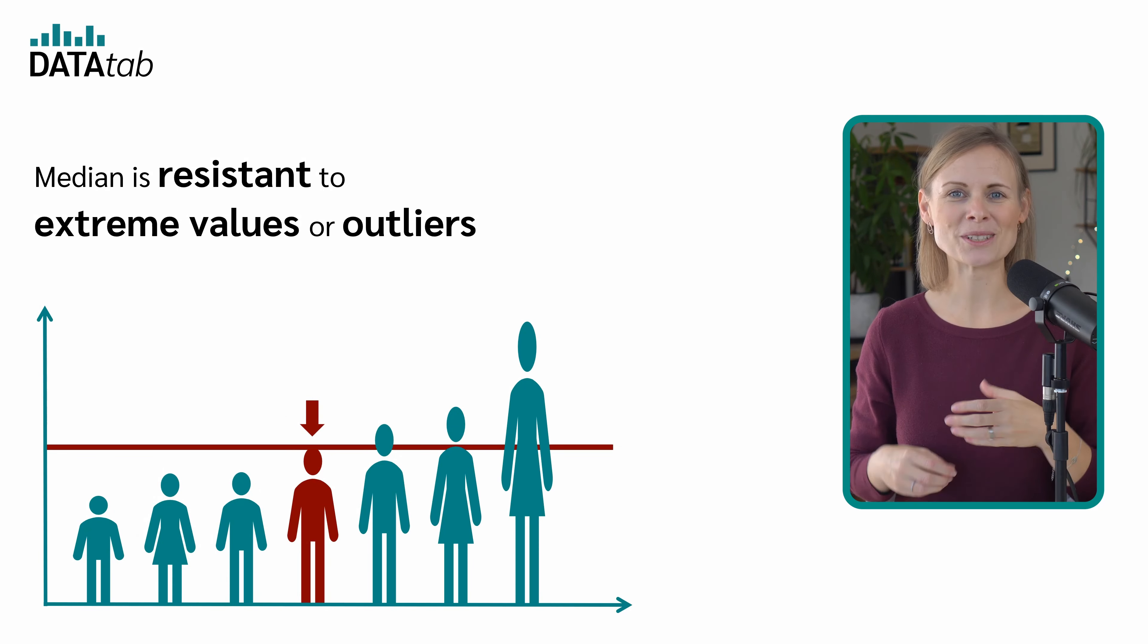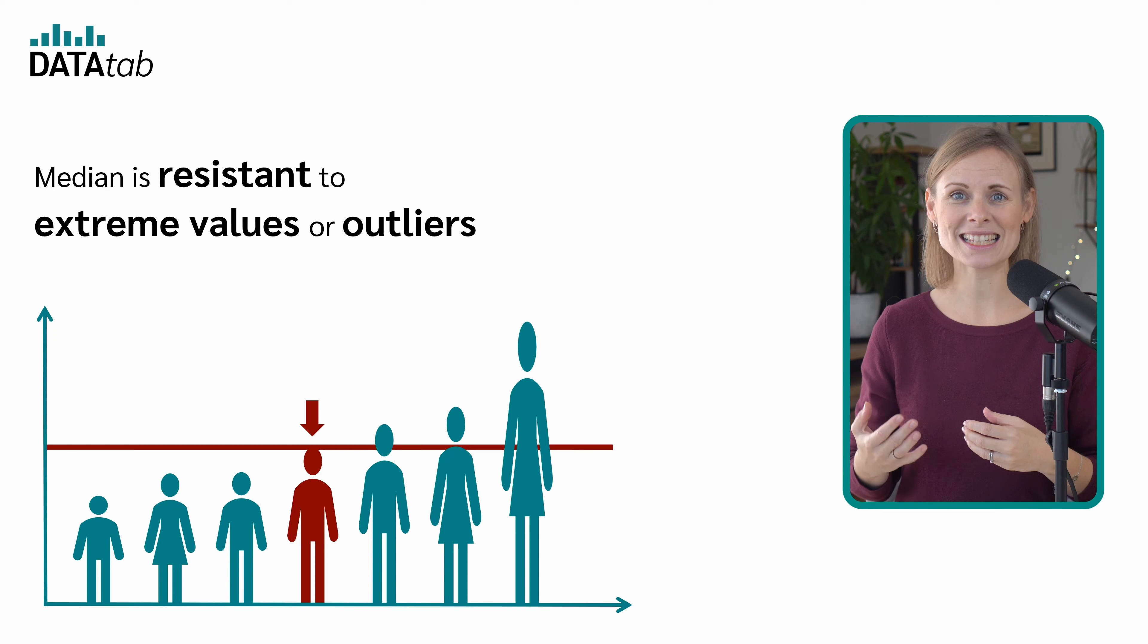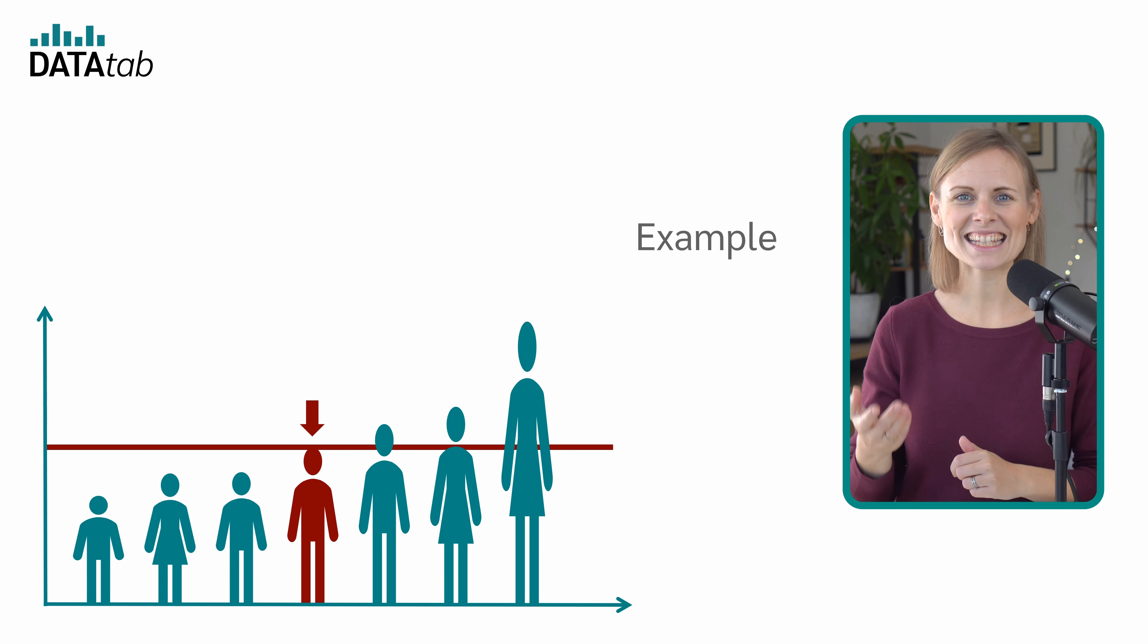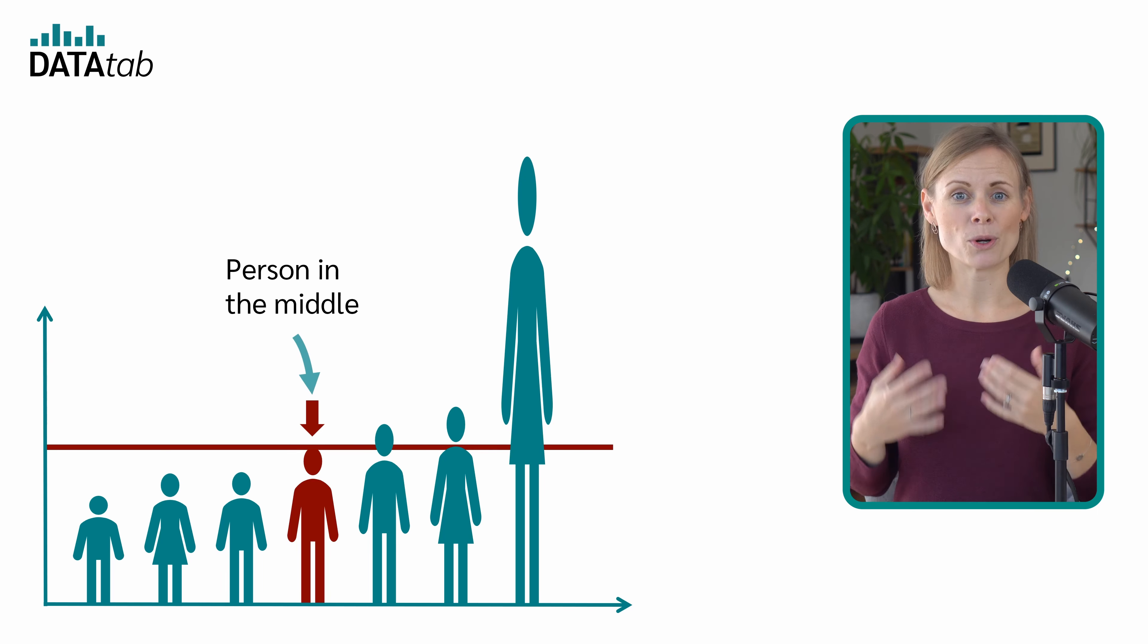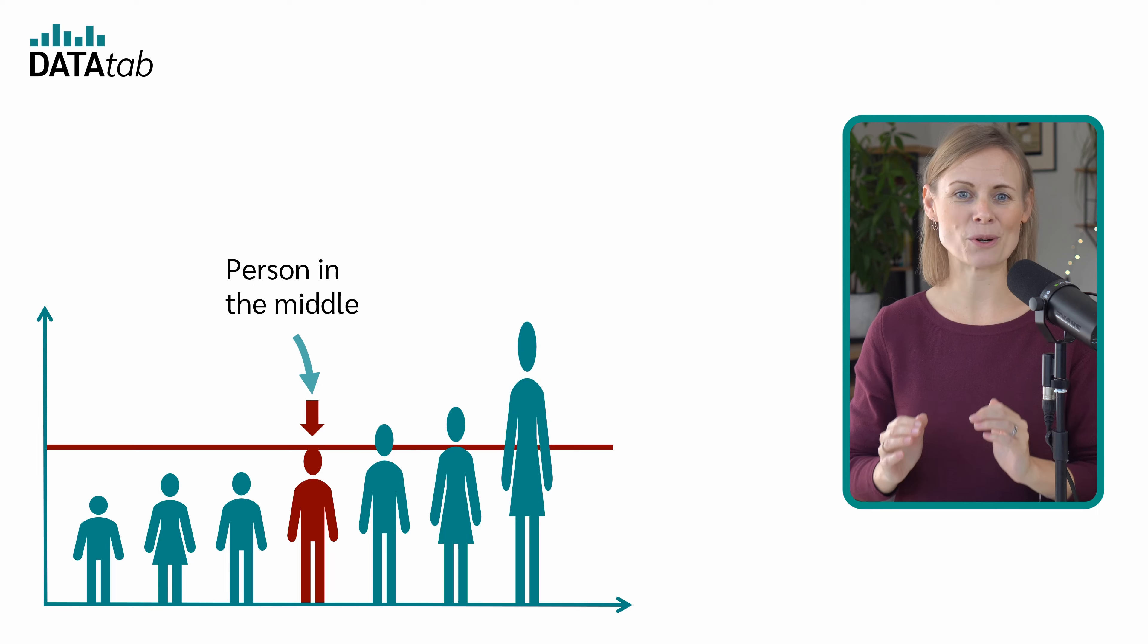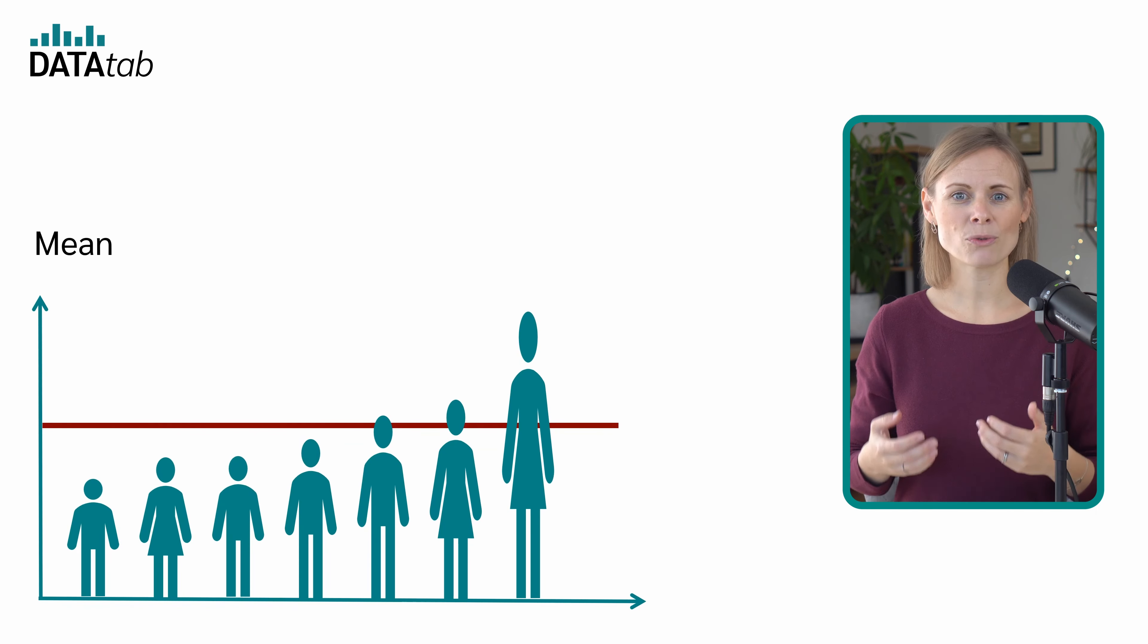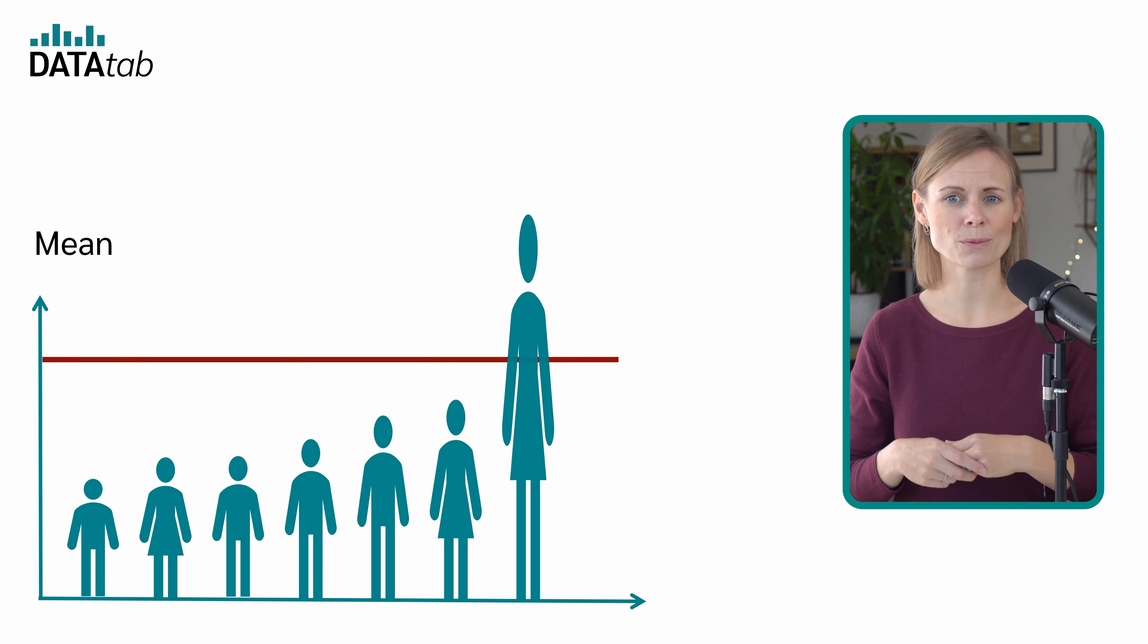It is important to note that the median is resistant to extreme values or outliers. Let's look at this example. No matter how tall the last person is, the person in the middle remains the person in the middle, so the median does not change. But if we look at the mean, it does have an effect based on how tall the last person is.